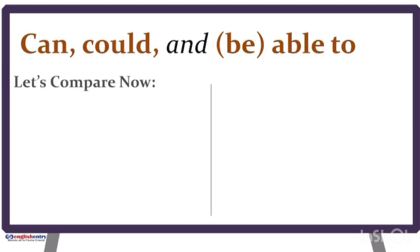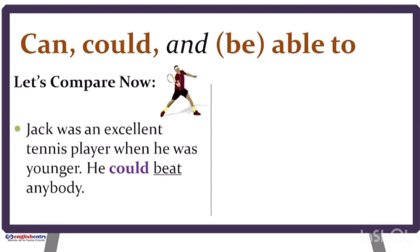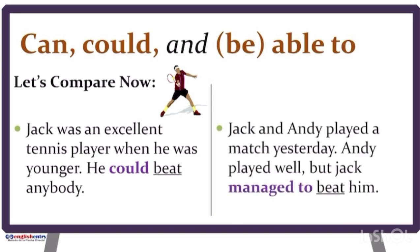Let's compare. Jack was an excellent tennis player when he was younger — he could beat anybody. This means he had the general ability to beat anybody. Now, Jack and Andy played a match yesterday. Andy played well, but Jack managed to beat him. In this sentence, it means he managed to beat him in that specific situation.